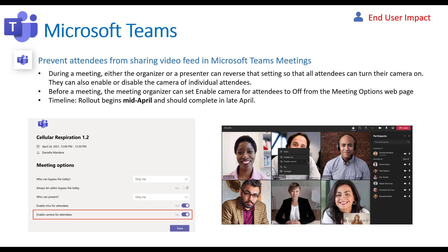The next one is more granular controls around video sharing. As an organizer of a meeting, you're able to disable or enable the camera before the meeting starts, or as you can see in the screenshot, you're able to disable cameras mid-meeting. One concern I had was whether enabling the camera for all attendees would auto-pop up their camera — they clarified it does not; it just gives the ability to turn it on or off. That'll happen in mid-April.